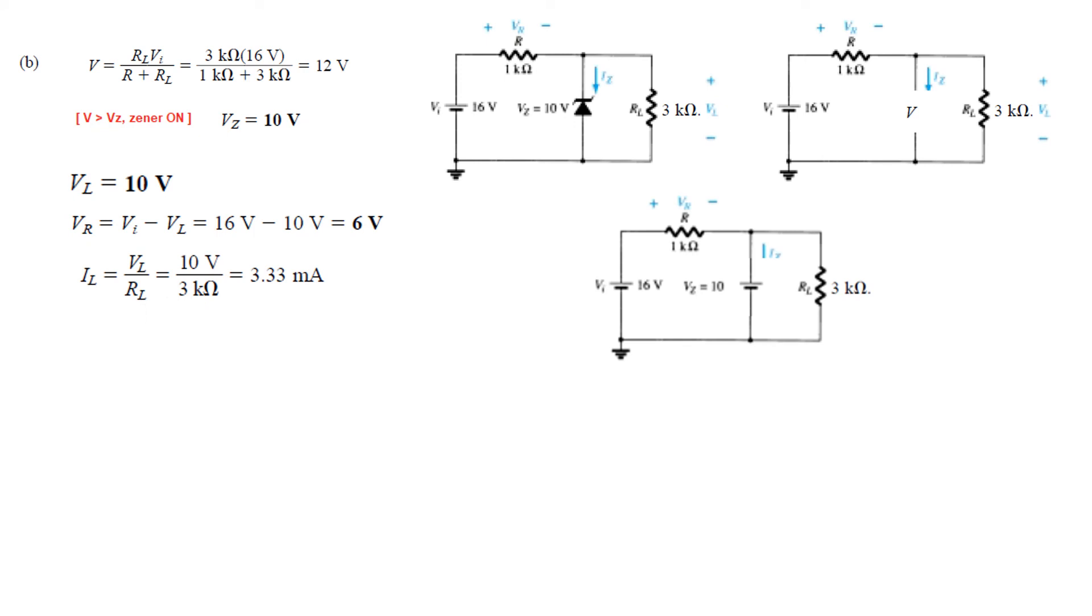The current now we can find is the voltage here. Or voltage this one. So 10 volt divided by this resistance, RL, 3.3 milliampere. So this is the current through the load L.